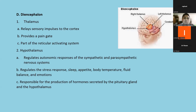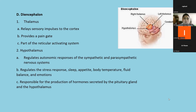The thalamus is also part of the reticular activating system. The hypothalamus regulates the autonomic response of the sympathetic and parasympathetic nervous system. It also regulates the stress response, sleep, appetite, body temperature, fluid balance, and emotion. Additionally, the hypothalamus is responsible for the production of hormones secreted by the pituitary gland.